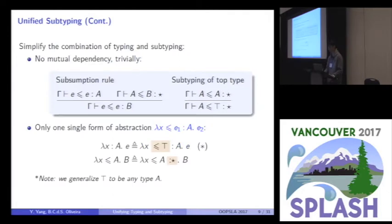The bound E1 can be given a type A. So, the normal abstractions, like this, are just syntactic sugar of this new one. The first line here, we give the bound top type. And the second line here, we give the bound A, the kind star. And the small note here is that, to allow such syntactic sugar, we generalize top type to be any type A.